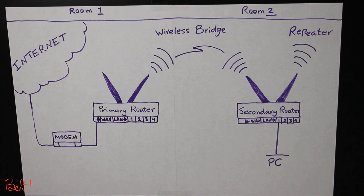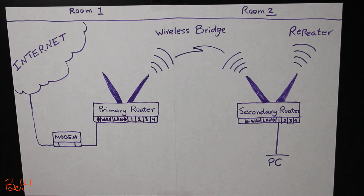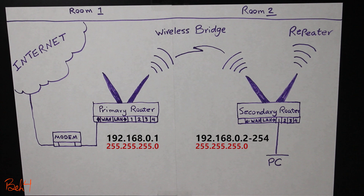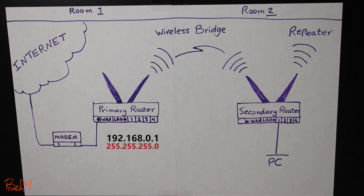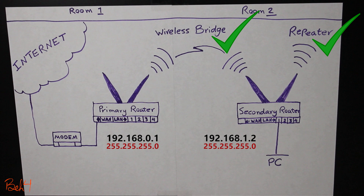For example, if the primary router is 192.168.1.1 with the subnet mask of 255.255.255.0, the secondary router could be any available IP address in the range of 192.168.1.2 all the way to 254. If the primary router is 192.168.0.1, then the secondary router should be anywhere between 192.168.0.2 all the way to 254. If the primary is 192.168.0.1 and we set the secondary to 192.168.1.2, because they're not on the same subnet, we won't be able to access the web interface of the secondary router anymore, even though everything else including the wireless bridge and the repeater might still work fine.